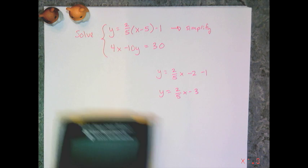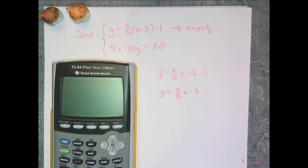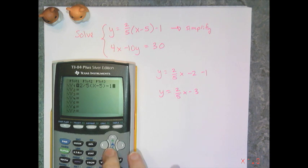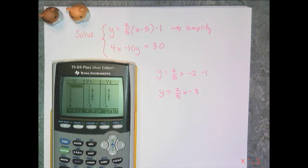Now I want to double check to make sure I did this right, because if I simplified that wrong, that means every single step I take after this is also going to be wrong. So I'm going to do 2 fifths times x minus 5 minus 1 as y1, and y2 is going to be what I think the simplified version is going to be, 2 fifths x minus 3. And these two lines better be exactly the same or I messed up. Oh, and they are exactly the same, so yay.